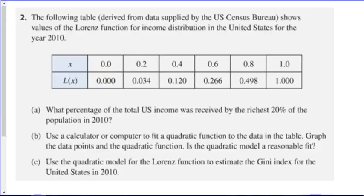So now let's look at an example with some real data. The following table, derived from data supplied by the U.S. Census Bureau, shows values for a Lorenz curve for the U.S. income distribution in the United States for the year 2010. We have fractions of the population, referring to like the bottom 40%, the bottom 60%, the bottom 80%, and what percentage of the income those fractions of the population receive. The first question here is, what percentage of the total U.S. income was received by the richest 20%?